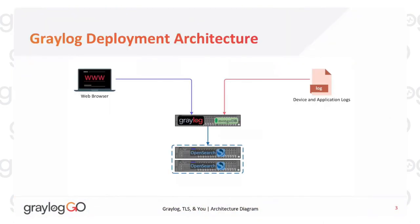A typical Graylog deployment looks something like this, where you have your clients and web browsers — your users log into a Graylog server over HTTP. You have log sources sending logs through TCP, UDP, and GELF. Then you have the connection between the Graylog web server and the OpenSearch backend, as well as connections between OpenSearch nodes, all within a separate little network.